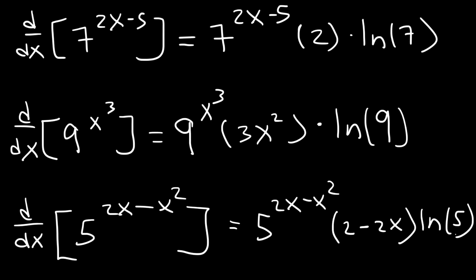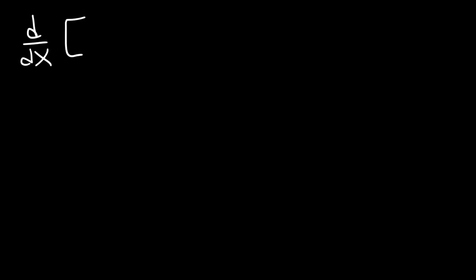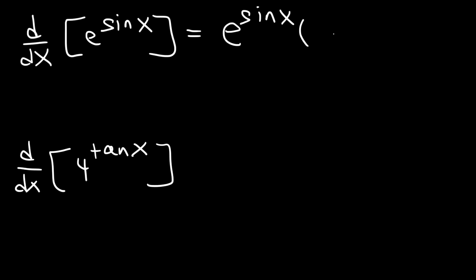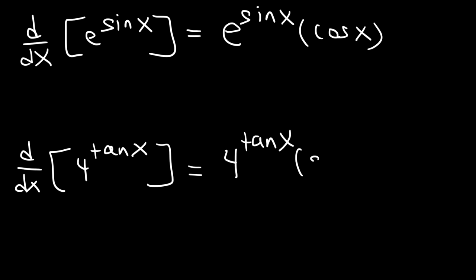Hopefully these examples gave you a good idea of how to differentiate exponential functions. Now let's work on a mixed review of problems. Find the derivative of e raised to the sine x, and differentiate 4 raised to the tangent x. So it's going to be e to the u where u is sine x, times u prime — the derivative of sine is cosine. For the second, it's a to the u where a is 4, u is tangent, times u prime — the derivative of tangent is secant squared — times the natural log of 4.